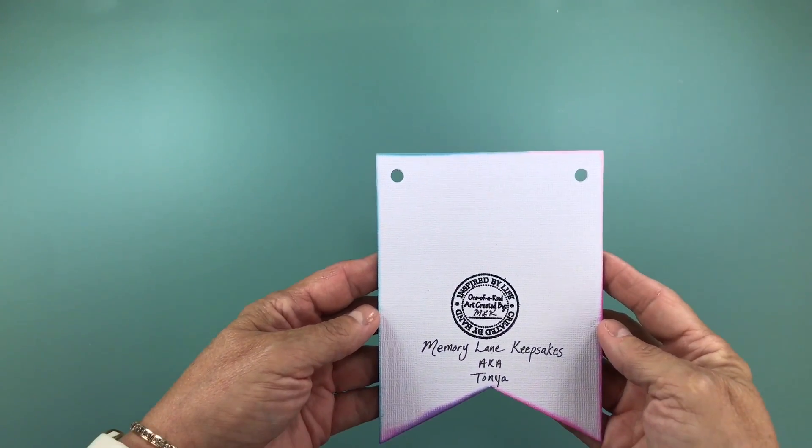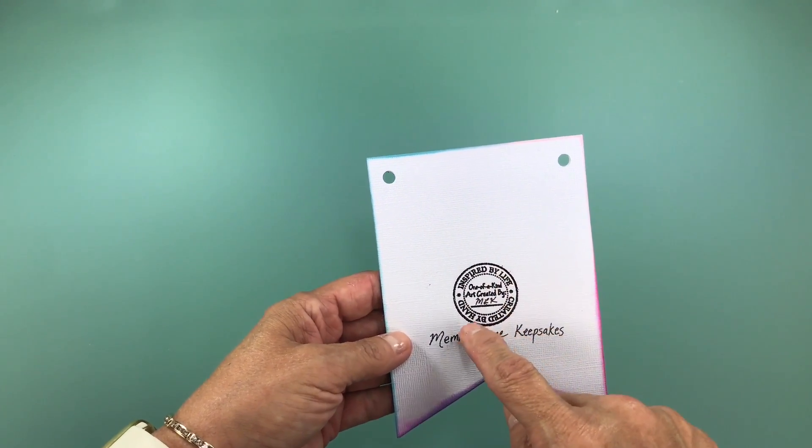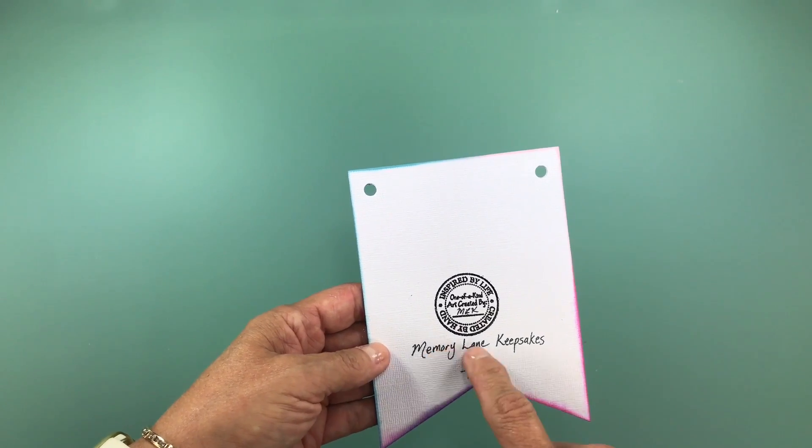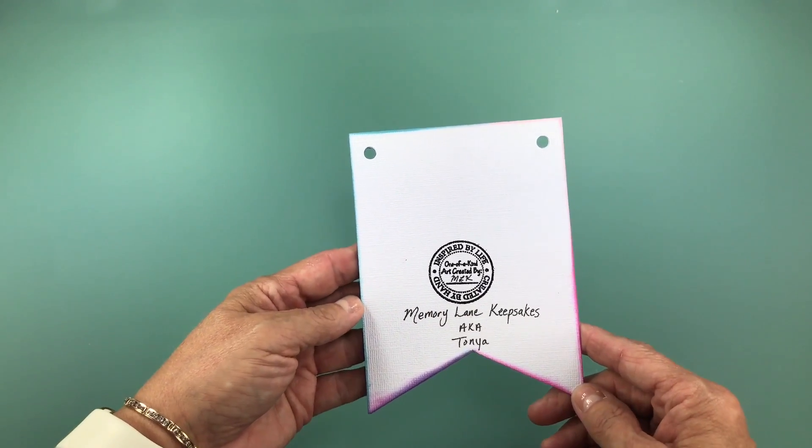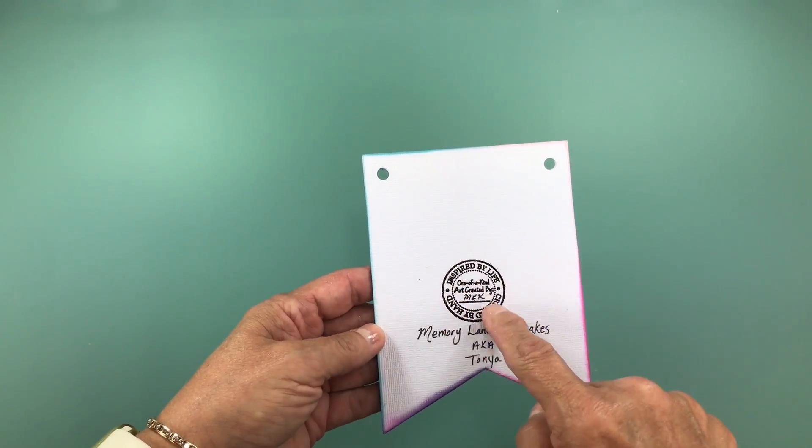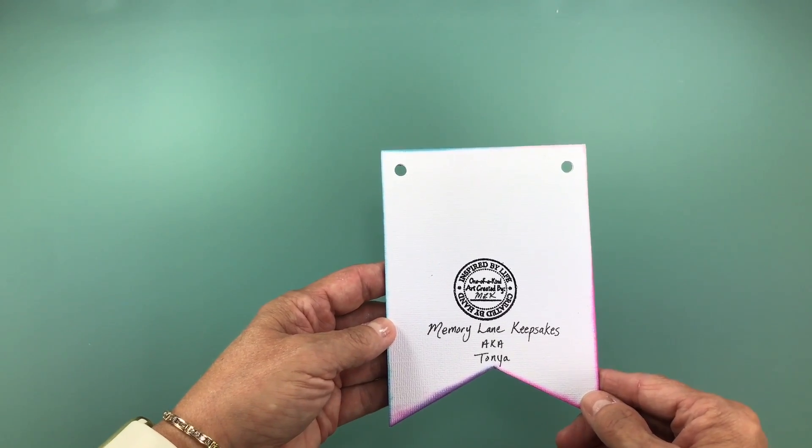And then wait till you guys see this banner. So here's the back of the banner. Inspired by life, created by hand. One of a kind art created by Memory Lane Keepsakes, also known as Tanya. Isn't that a great little stamp? All right. You ready?